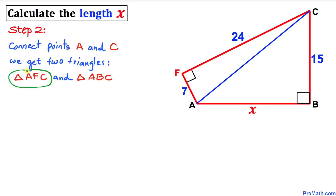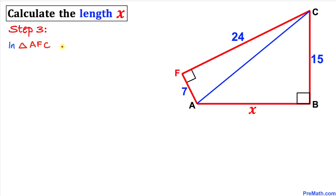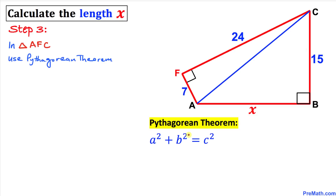One triangle is A, F, C — this one — and the other triangle is triangle A, B, C. Both triangles share this hypotenuse in common. In the next step, let's focus on triangle A, F, C. We know that this is a right triangle, therefore we are going to use the Pythagorean theorem: A squared plus B squared equals C squared.